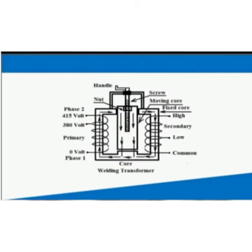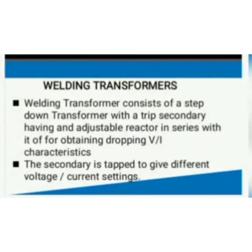Now, see the diagram of the welding transformer. There are two types of welding transformer: primary and secondary. The top of the welding transformer has a handle, screw, moving core, fixed core, high, low, common, nut, phase 2, 115 volt, 380 volt, 0 volt, and phase 1 core. Here we see what a welding transformer is. A welding transformer consists of a step-down transformer with a strapped secondary having an adjustable reactor in series, obtaining a drooping V/I characteristic. The secondary is tapped to give different voltage and current settings.